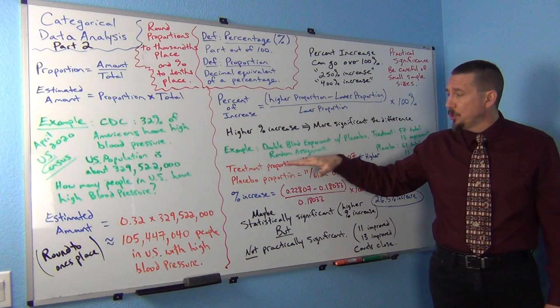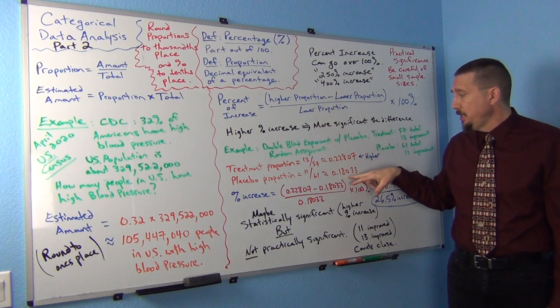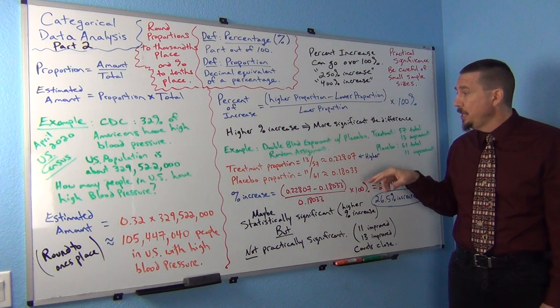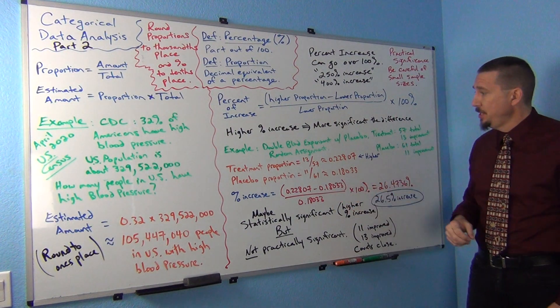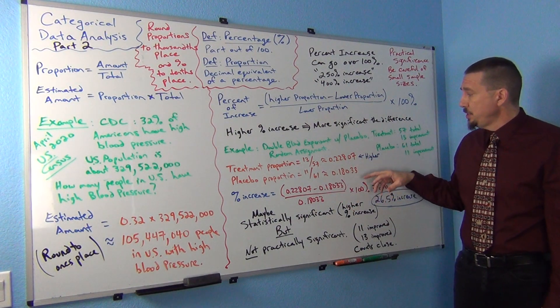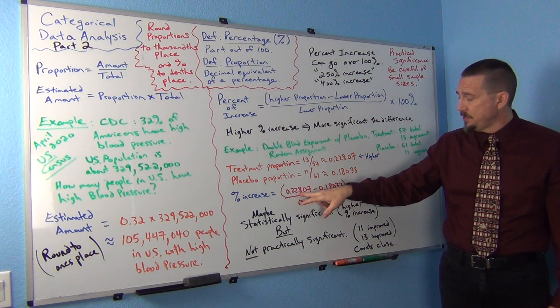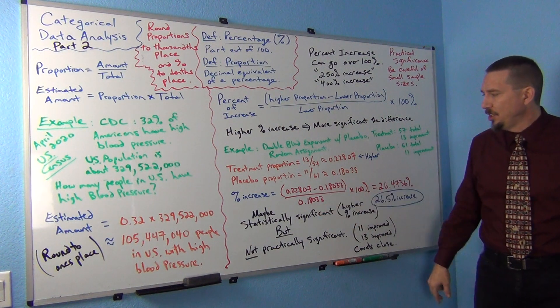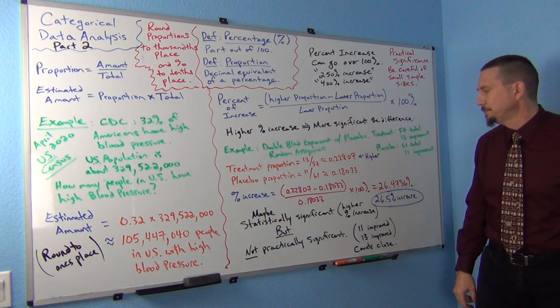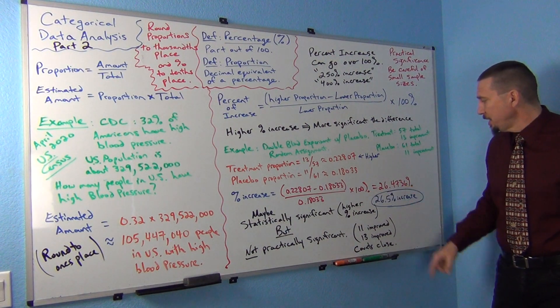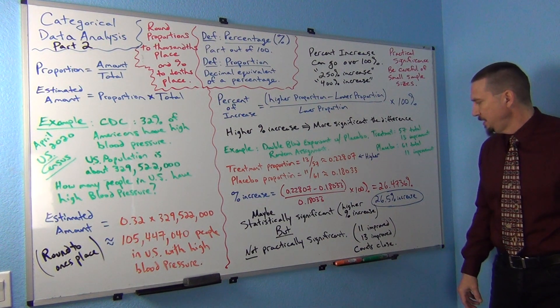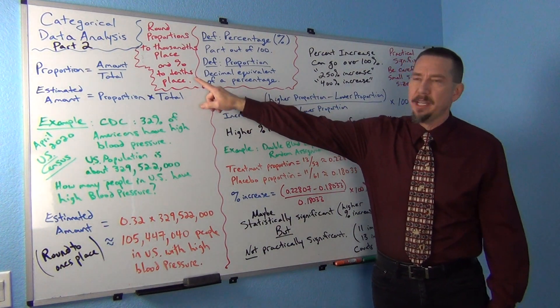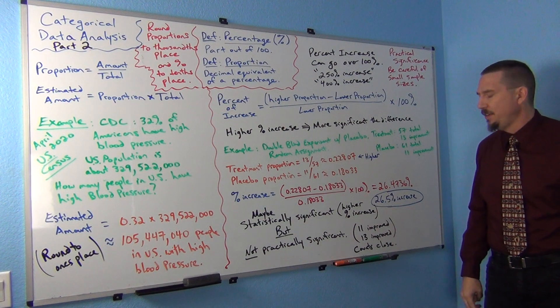Alright, so now if I notice, the treatment group was higher, right? .228 to .18. But the question is, is it significantly higher, right? I can see that this one's higher. And that's where you might want to calculate a percent of increase. So a percent of increase, what you do is you take the higher proportion, .22807, minus the lower proportion, .18033, and then divide by the lower proportion, .18033. Multiply the answer by 100%, and it looks like we got about 26.4736%. I went ahead and rounded that. Since percentages, we usually round to the tenths place, one number to the right of the decimal. So I rounded that to about 26.5%.